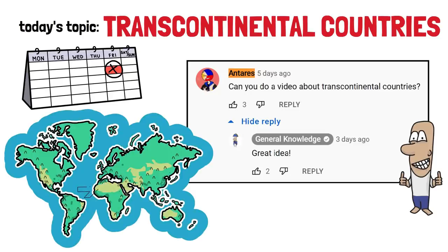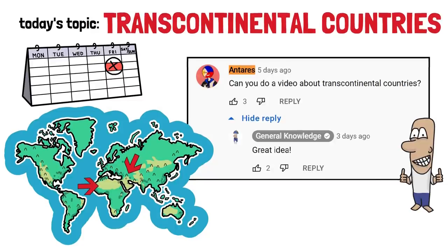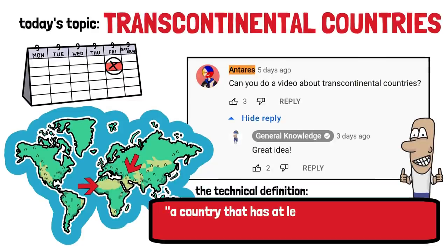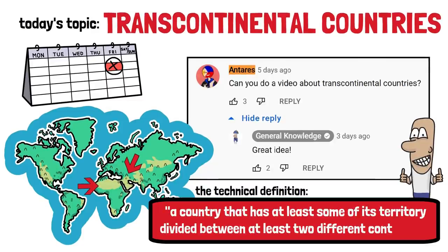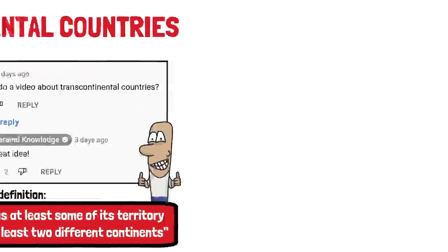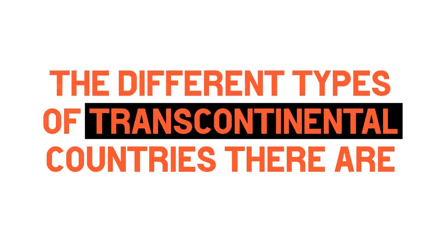What's the technical definition of a transcontinental or intercontinental country? It's a country that has at least some portion of its territory geographically divided between at least two different continents. But we need to differentiate between the various types of transcontinental countries that exist.